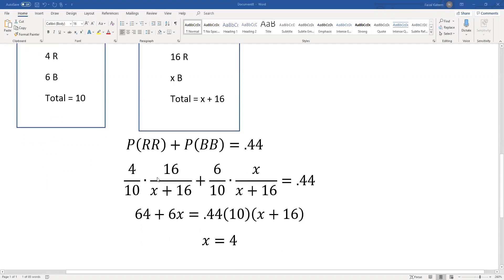And now we have a common denominator. 4 times 16 is 64 plus 6x. The common denominator will be 10 times x plus 16. And then once you distribute this out and do the algebra, you get x equals 4.